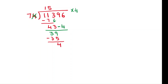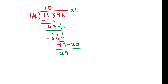Bring down the next number, which is 9, giving us 49. When bringing down, work with the last digit of the quotient and 4: 4 times 5 is 20. 49 minus 20 is 29. Then 7 times 4 is 28. 29 minus 28 is 1.